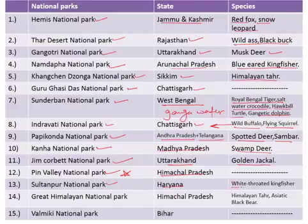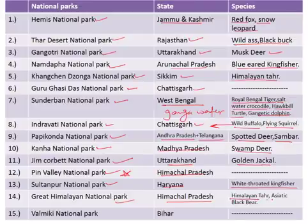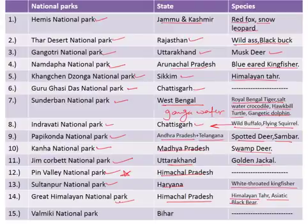The Great Himalayan National Park is situated in the state of Himachal Pradesh and is famous for the Himalayan Thar and Asiatic black bear. You might be confused because of its name — don't think it is in Jammu and Kashmir. It is actually situated in Himachal Pradesh. Next is the Valmiki National Park, situated in the state of Bihar.